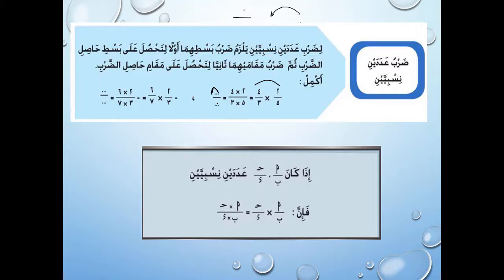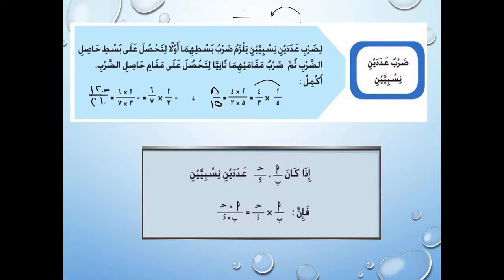خمسة في تلاتة يديني مقام الناتج وهو 15، فالناتج 8/15. نفس الفكرة مع سالب 2/3 في 6/7: بسط الناتج سالب 12، ودائماً بحط الإشارة السالب في ناحية البسط، والمقام 21. وممكن طبعاً نختصر، إما من البداية أو من النهاية.